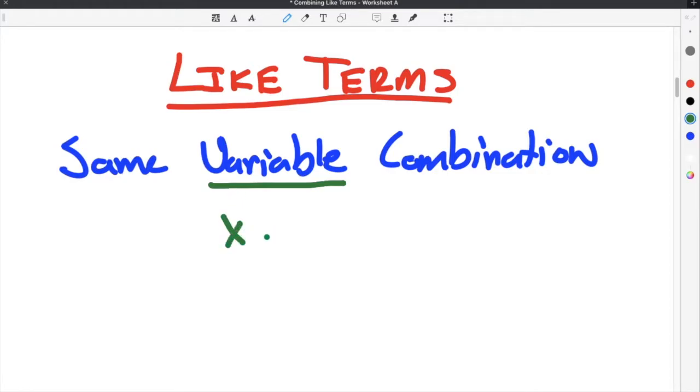So typically this would be like x or y you will usually see in math class, but it could also be a combination of variables. So it could be like x and y put together. Sometimes you'll see ab as a combination or mn. So any term that would have some type of variable or variable combination would be a like term with any other term that had the same variable or the same variable combination.